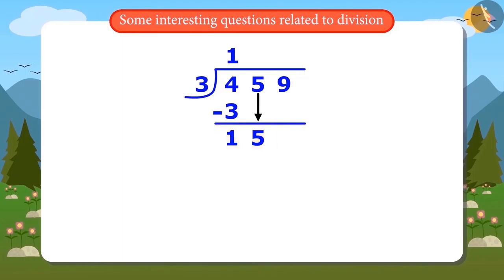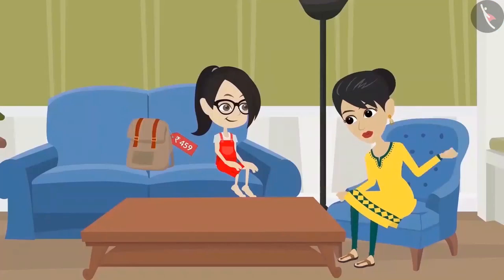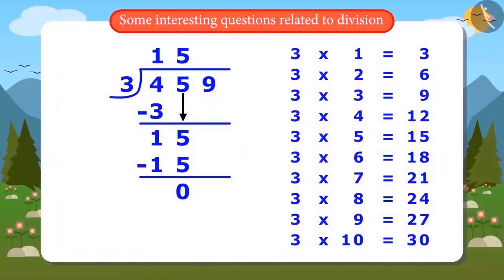Okay, Mummy. 3 times 1 is 3. 3 times 2 is 6. 3 times 3 is 9. 3 times 4 is 12. 3 times 5 is 15. So, the answer after dividing 15 by 3 is 5, and the remainder is 0.